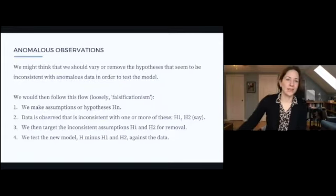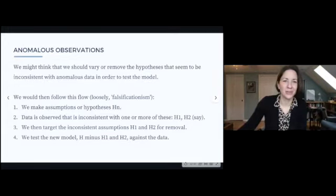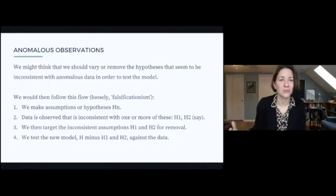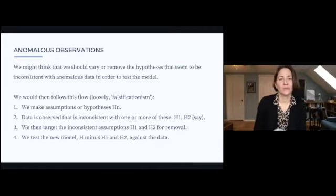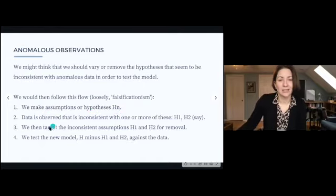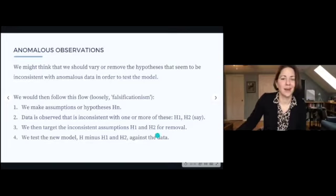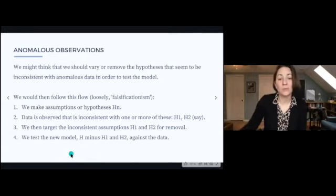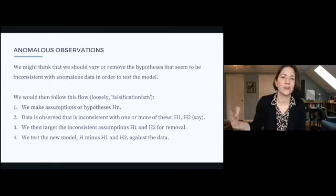In naive falsificationism, we follow this flowchart: we make a set of assumptions or hypotheses H_N associated with a model or theory, data is observed that's inconsistent with one or more of these, so we target H1 or H2 for removal. We say we found inconsistent evidence and so now we're going to remove these assumptions. Then we test the new model — H minus H1 and H2 — against the data, so now we have a new more parsimonious model minus these errors or inconsistent assumptions.